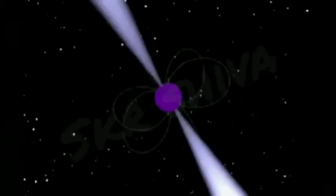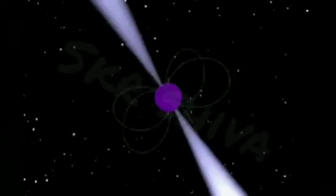Its equator is spinning at approximately 24 percent of the speed of light, or over 70,000 kilometers per second.